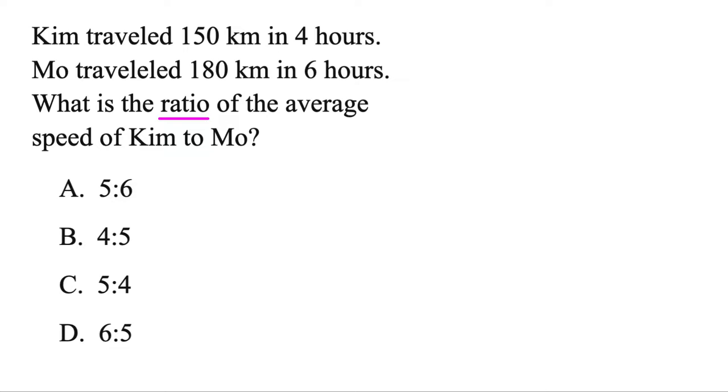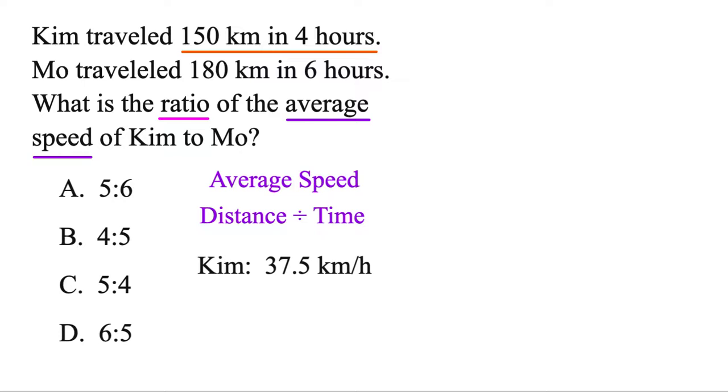And one last one. Here we're finding the ratio but for average speeds. To find an average speed, you just do distance divided by time. So if we take Kim for instance and we do 150 divided by 4, that'll end up giving us 37.5. Same thing for Mo, we do 180 total distance divided by 6 total time. That'll end up giving us 30.